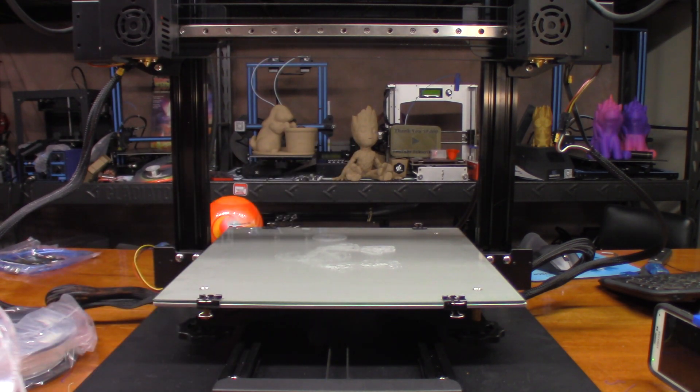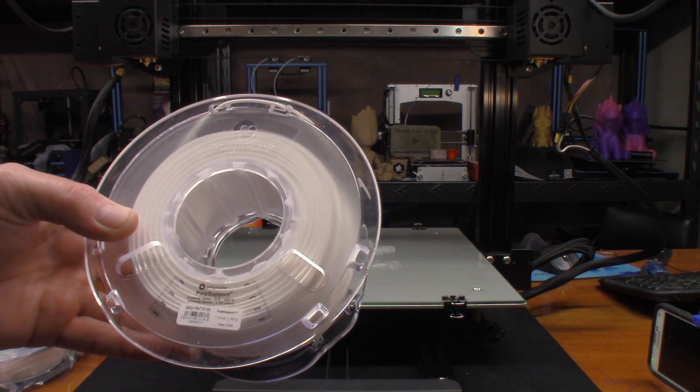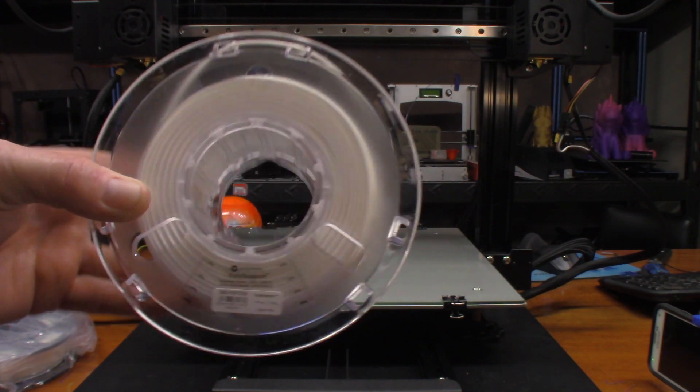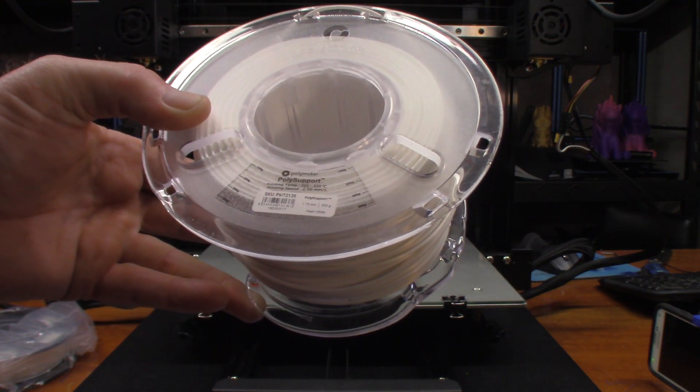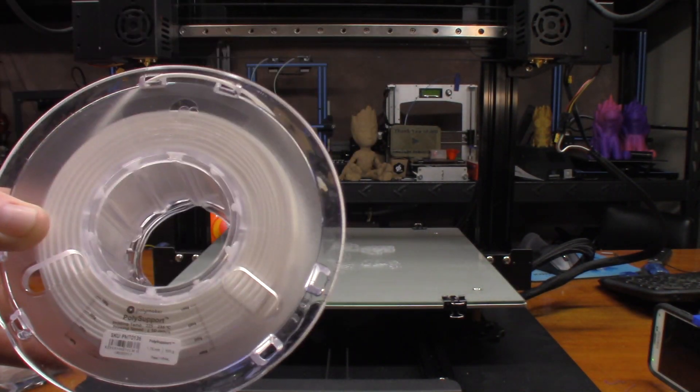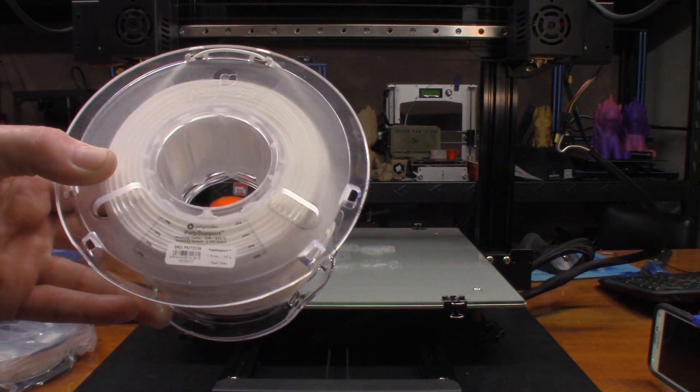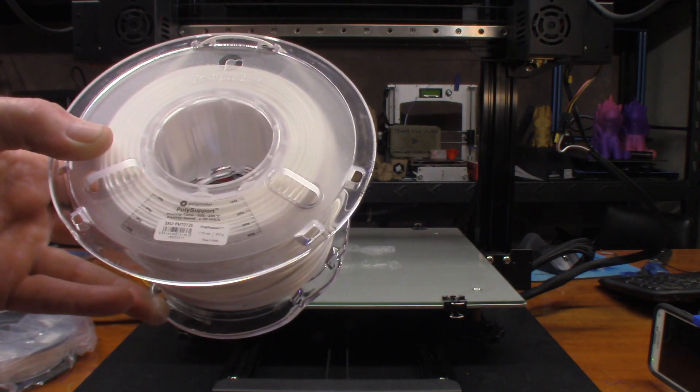What he's wanting to do is try a breakaway support. Now this is the poly support, a breakaway support material, so it's different from PLA in the fact that it breaks away cleaner than just having PLA to PLA.